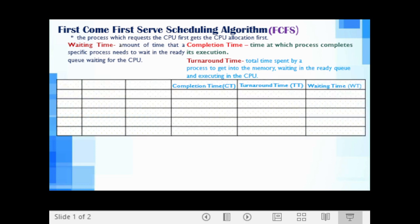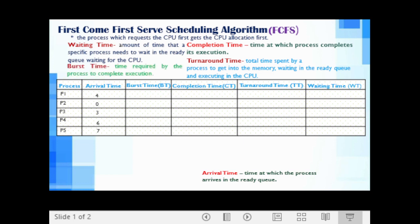We are given five processes: P1, P2, P3, P4, and P5. Arrival time is the time at which the process arrives in the ready queue. The arrival time of P1 is 4, P2 is 0, P3 is 3, P4 is 6, and P5 is 7. Burst time is the time required by the process to complete execution. The burst time of P1 is 5, P2 is 2, P3 is 2, P4 is 7, and P5 is 6.